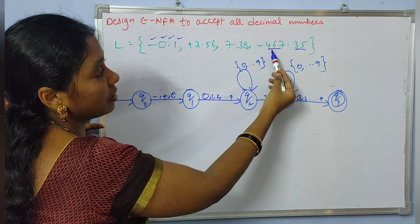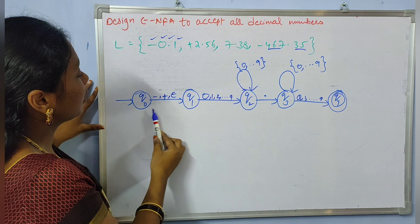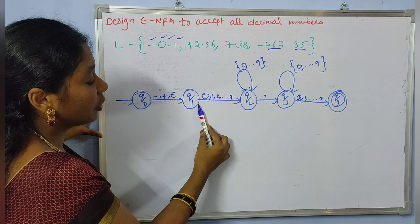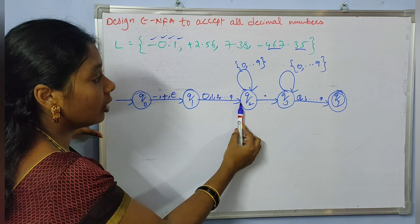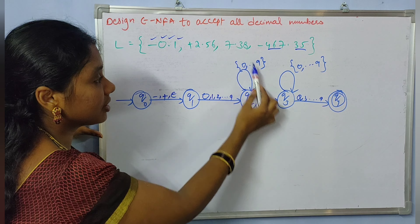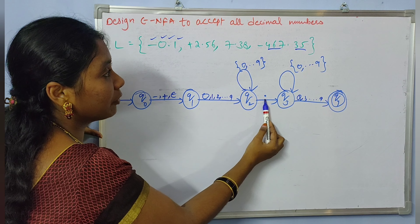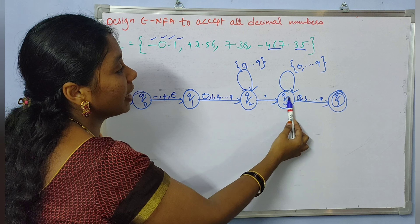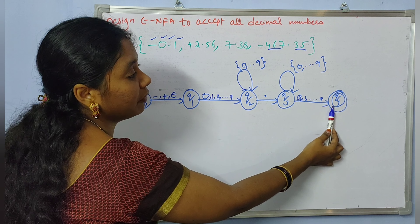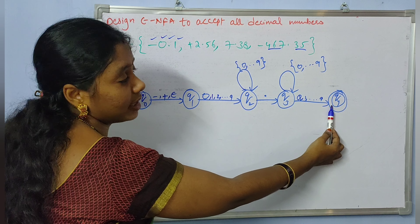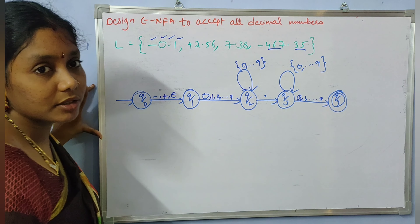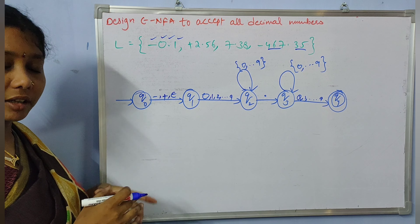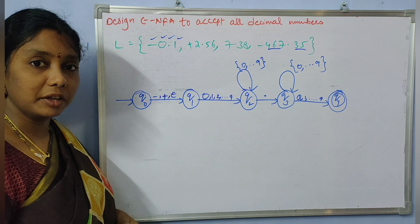For minus 467.35: take minus from here, then 4, 6, 7 using the loop transition, then the decimal point, then 3 and 5 — reaching the final state. So all strings are accepted. This is the required epsilon-NFA for the given problem. Thank you for watching the video.